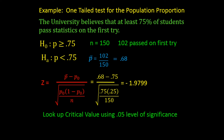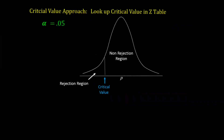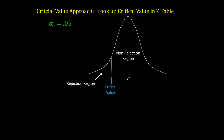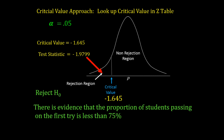Looking up the critical value using a .05 level of significance in the z-table, .05 falls between two values corresponding to 1.6 on the left and between .04 and .05 on top, so we use negative 1.645 as our critical value. Our test statistic of negative 1.9799 falls beyond negative 1.645, placing it in the rejection region. Therefore, we reject the null hypothesis and find there is evidence that the proportion of students passing on the first try is less than 75%.